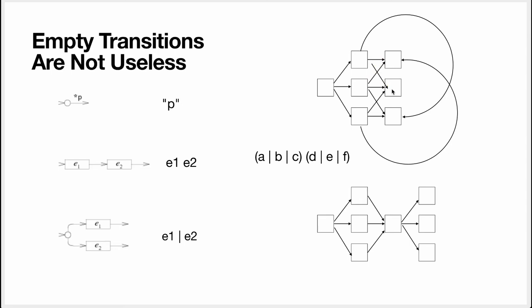You can understand why I didn't put labels on them because it would have been quite unwieldy. So you see that empty transition helps you basically keep the number of transitions in check. So that's why they are useful.